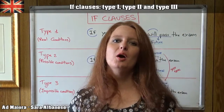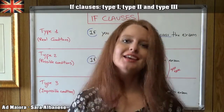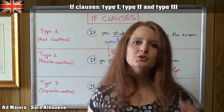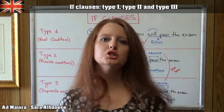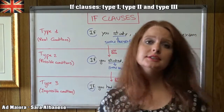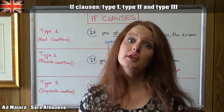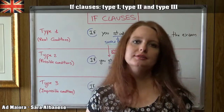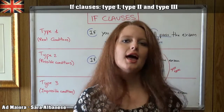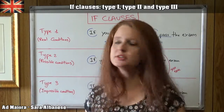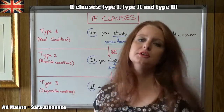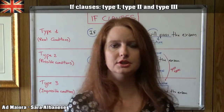Hi everybody, welcome back to our English grammar lessons. Today we're going to talk about the IF clauses. The IF clauses are used in English, as in any other language, to express hypotheses, to express real conditions or possible conditions, or also impossible conditions. This is why they are formed in different ways and divided into three types: Type 1 for real condition, Type 2 for possible condition, and Type 3 for impossible condition.